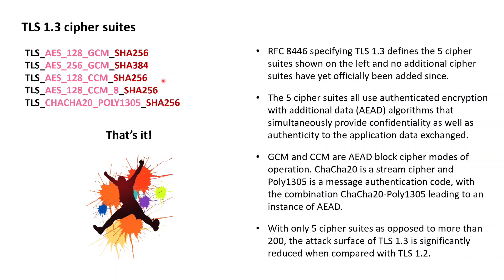Besides GCM, two cipher suites are also defined that make use of the CCM block cipher mode of operation, which is a second instance of authenticated encryption with associated data. The fifth cipher suite available within TLS 1.3 makes use of ChaCha20-Poly1305, where ChaCha20 is a stream cipher and Poly1305 is a message authentication code, which combined together simultaneously provide confidentiality as well as authenticity.